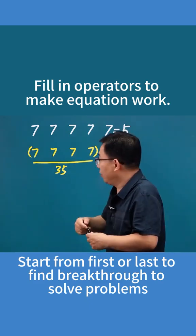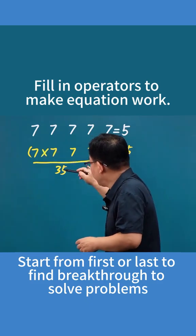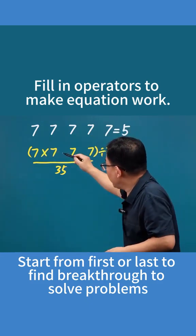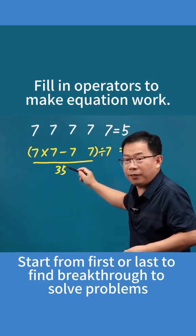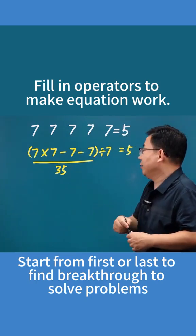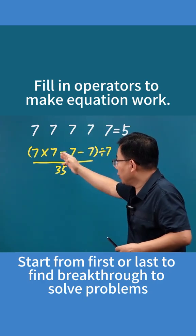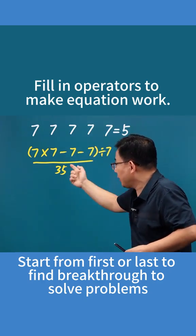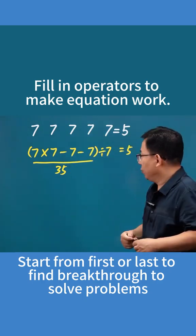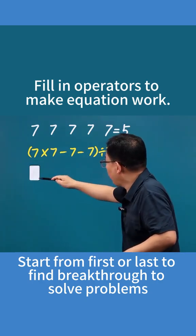But if you just multiply any of them, the result will be greater than 35. That's okay. We can subtract, right? Subtract one 7 and it's still greater than 35. Subtract another 7 and you'll find that 77 minus 7 minus 7 happens to equal 35. That works perfectly.